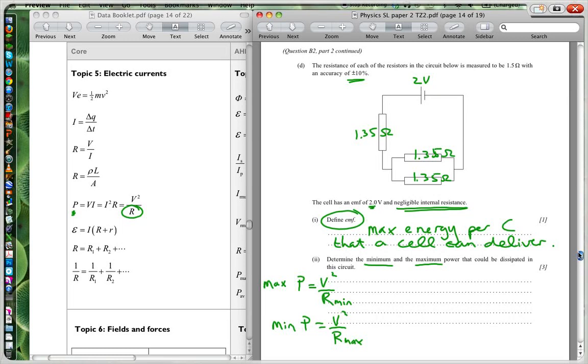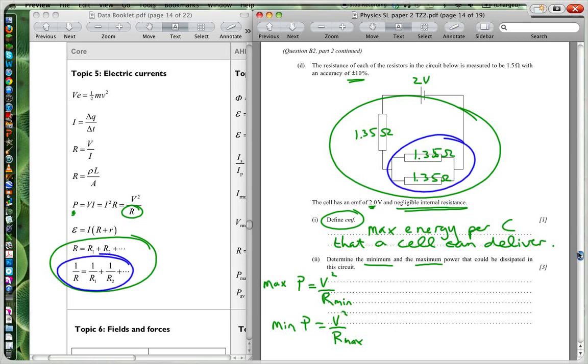So to work out the total resistance of this whole circuit, we're going to use these formulas over here. Firstly, I'm going to use this formula here to work out the resistance. So for the parallel, I'm going to get 1 over R parallel. 1 over the R total is 1 over 1.35 plus 1 over 1.35.